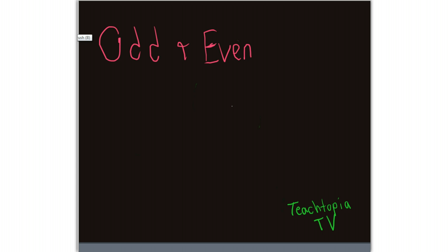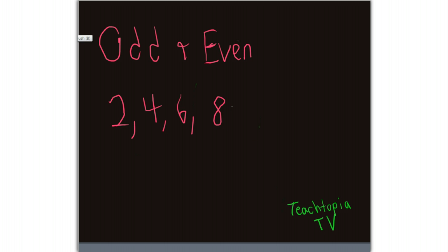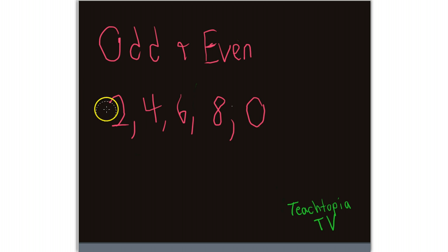The way I tell students to identify even numbers is I simply go 2, 4, 6, 8 — and then I say '2, 4, 6, 8, who do we appreciate?' There's one more number you need to know, and that is 0. So 2, 4, 6, 8, and 0 are even numbers. Then you'll understand that anything other than 2, 4, 6, 8, and 0 are odd numbers.